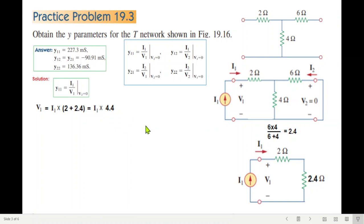From here, we'll calculate i1 over v1, which will be 1 over 4.4, and which equals 0.2273 siemens. This is our required parameter y11, so y11 is 0.2273 siemens, which can be written in millisiemens as 227.3 millisiemens.